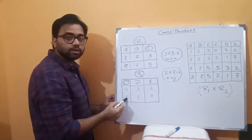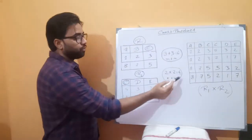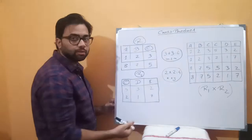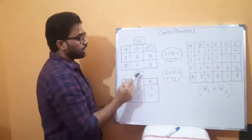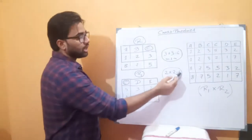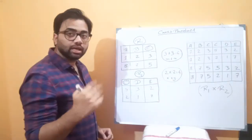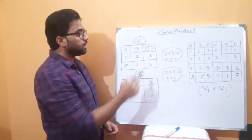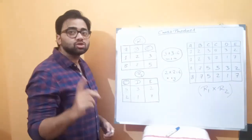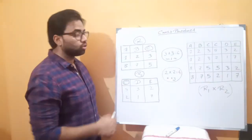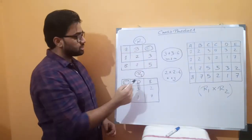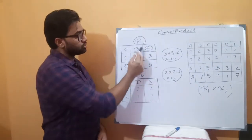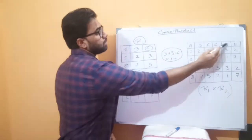The number of rows: 2 into 2, that's 4 rows. The result has 4 rows from R1 and R2. For columns: 3 plus 3 is 6. So we have 6 attributes in the result table — combining the columns from both tables.